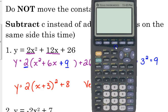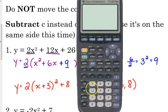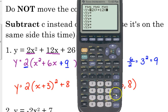We can confirm that. There are a couple of things that I want you to do with this. First of all, I want you to graph the original. 2x² + 12x + 26. Put that in your y1. Put your vertex form in y2.